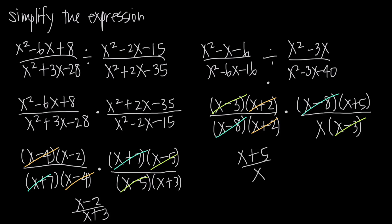Again, the key with division of rational expressions is turning them into multiplication problems by taking the reciprocal of the second fraction. Then instead of just multiplying across, we want to factor, cancel like terms within the fractions, and cancel like terms across the fractions. After we've simplified as much as possible, we multiply across the numerators and denominators together to get the final answer.